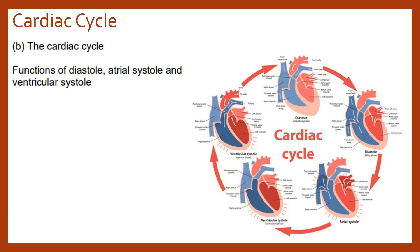Two bits of terminology you're going to hear constantly throughout this video: diastole, which refers to relaxation, and systole, which refers to contraction. The three major events of the cardiac cycle that we'll discuss are cardiac diastole, where the whole heart is relaxed; atrial systole, where the atria are contracting; and ventricular systole, where the ventricles are contracting.